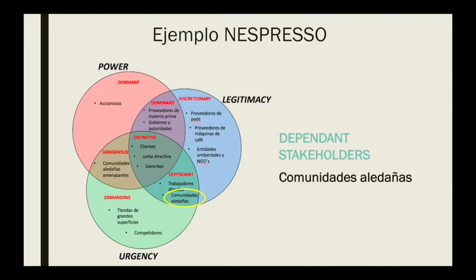These people have no power over the company, but they have high urgency to be heard because they have the capacity to interrupt Nespresso's labor and jeopardize the security of workers and the company as a whole. They also have high legitimacy because they are the principal agents capable of saying if the company is being responsible or not. For all this, neighboring communities are considered dependent stakeholders, and Nespresso must guarantee their security, generate opportunities, and respect their rights.